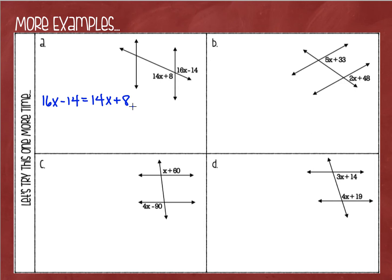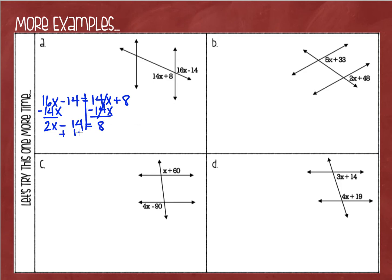If you want to stop the video and see if you can figure out the rest on your own, that would be great — just press play when you're ready to check. I'm going to subtract 14x on each side, leaving me with 2x minus 14 on the left and positive 8 on the right. I have a two-stepper, so I'm going to add 14 on each side, leaving me with 2x equals 22, then divide by 2, giving me x equals 11.